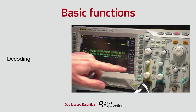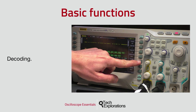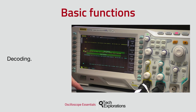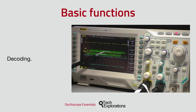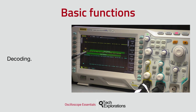A more advanced but common feature of modern digital oscilloscopes is the ability to decode a signal that contains information. When two devices communicate, they use a specific protocol so that data can travel between them. For example, in microcontroller and microcomputer applications, common protocols are serial UART, I2C, SPI and CAN.